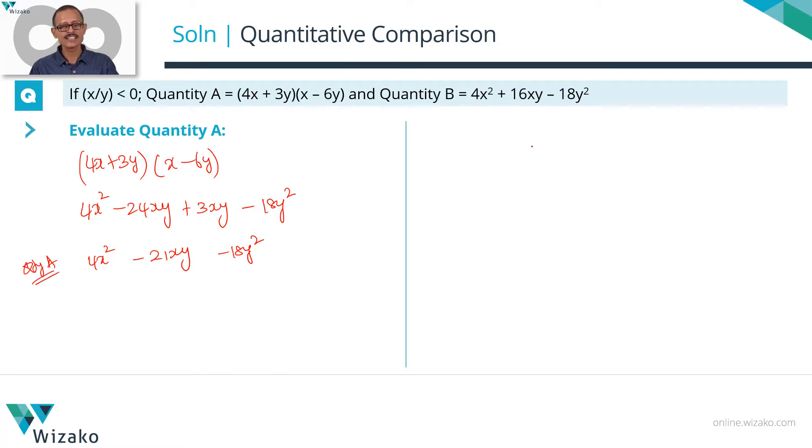When you take a glance at quantity B, a lot of these terms seem to be common. So let's write quantity B beneath it. So let's figure out what are all the common terms and therefore we need not bother about those. So we have 4x² present in both quantity A and quantity B. -18y² is also present in both these quantities.